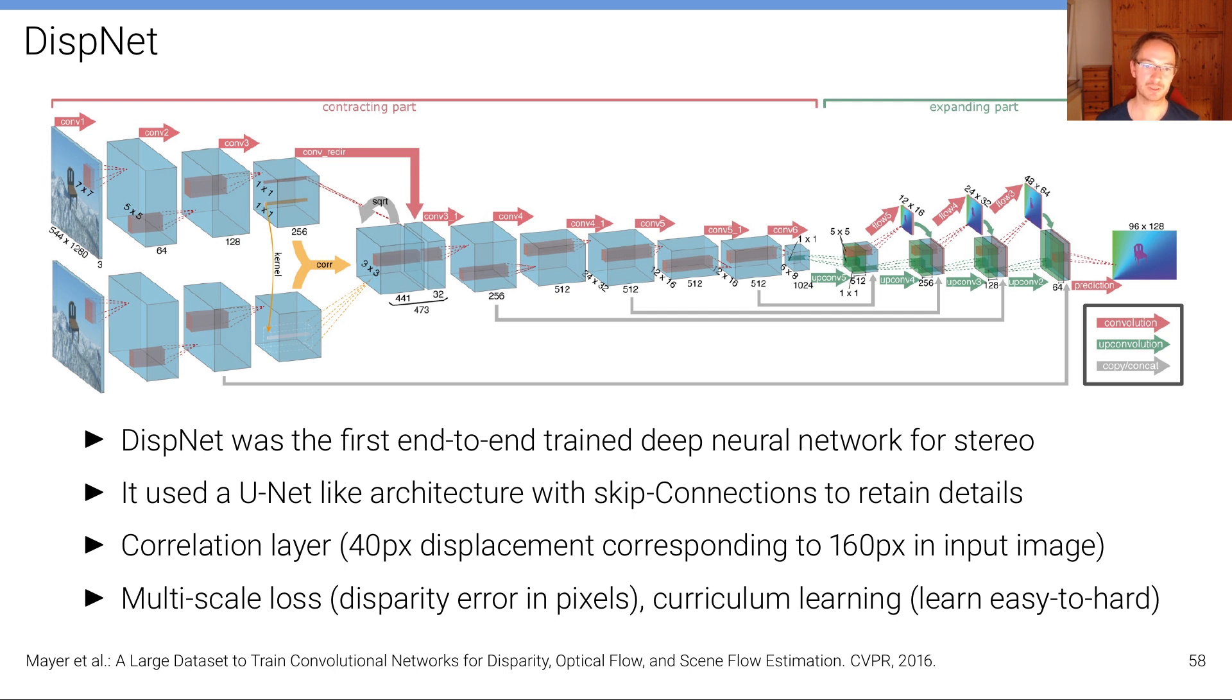In order to train this model, the authors used a multi-scale loss. So the loss was not only applied, the loss that measures the discrepancy between the predicted disparity and the ground truth disparity was not only applied at the last layer, but it was also applied for downscaled versions of the ground truth at intermediate layers.